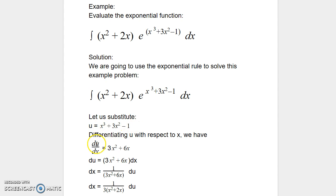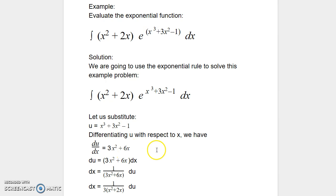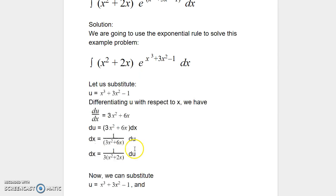u is a function of x, so we are going to differentiate u with respect to x. du/dx = 3x² + 6x. How? d/dx of x³ is 3x², d/dx of 3x² is 6x, and d/dx of −1 is 0, so that term is not written.